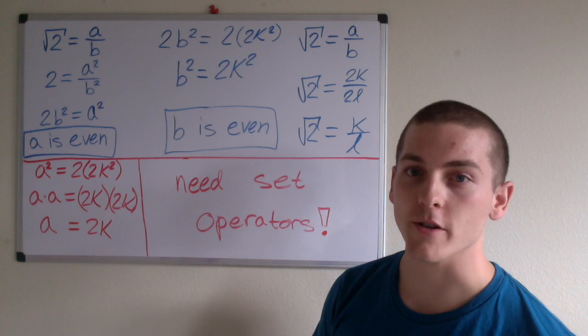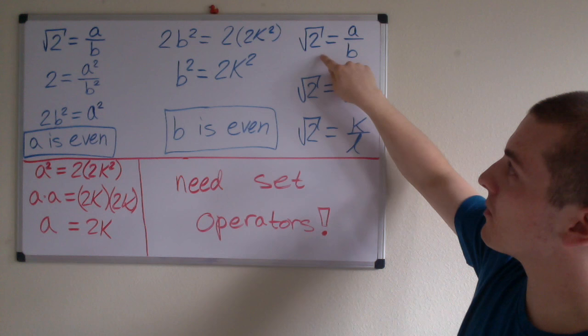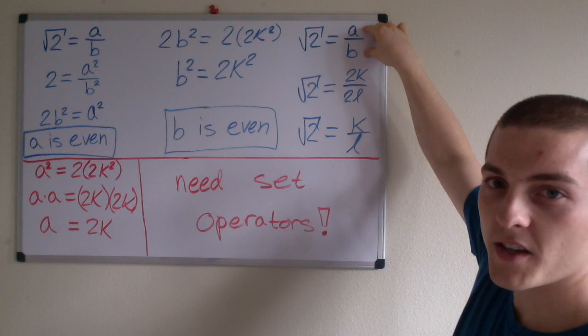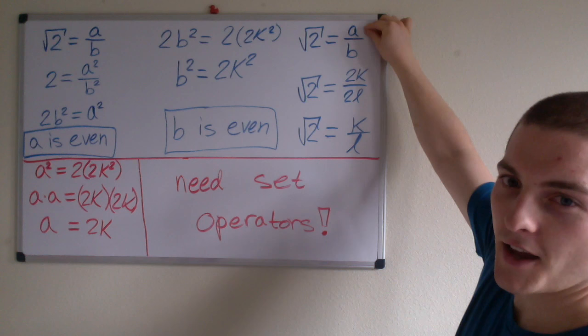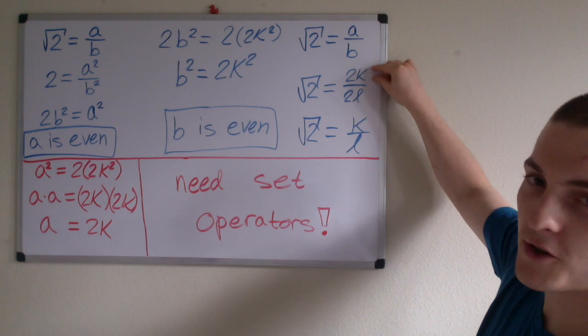Now, if we go back to our original premise, the square root of 2 equals a divided by b, where a divided by b is an irreducible fraction. But, since a is an even number, and b is also an even number, we can express these numbers as 2k and 2l.